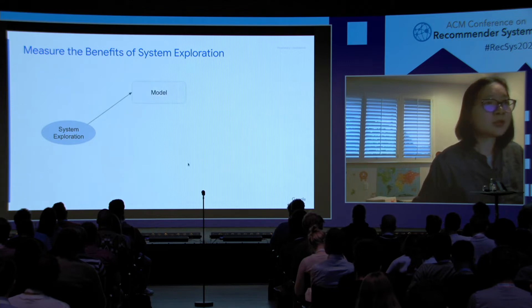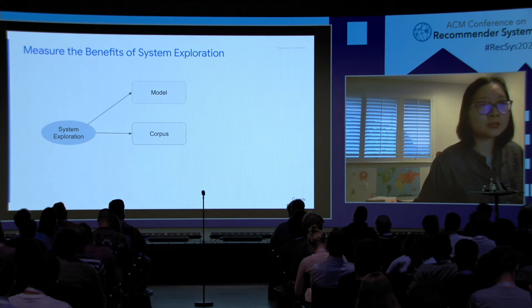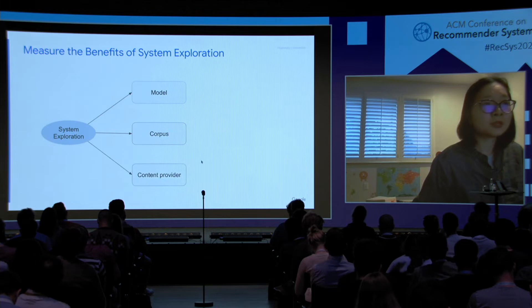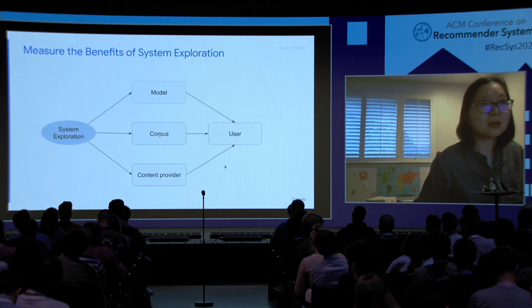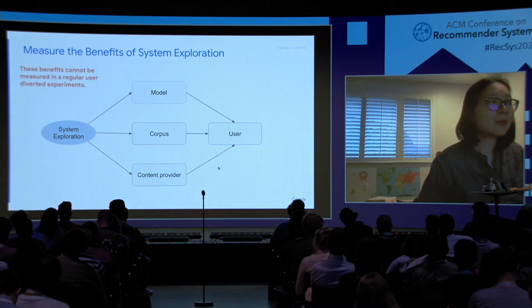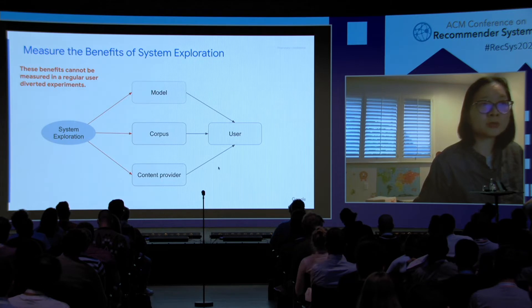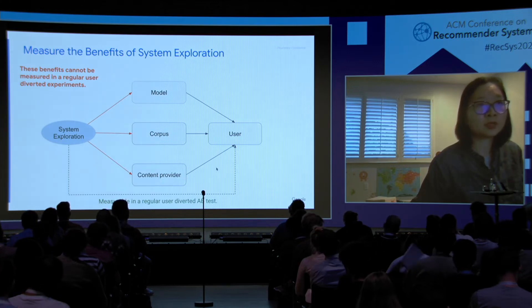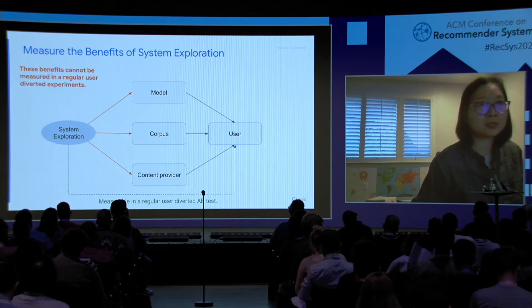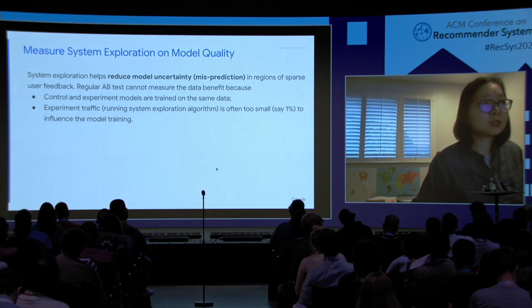System exploration has several indirect effects not measurable in a standard A/B setup. First, it can acquire data to improve model quality. Second, it can help enlarge the discoverable corpus or catalog. Third, it can help increase the content providers users have access to. These improvements in model, corpus, and content provider can in return help user experience on the platform. The benefit of system exploration on model, corpus, and content providers cannot be measured in a regular user-diverted experiment, though direct effects of surfacing tail or fresh content should be measurable in a user-diverted A/B test.